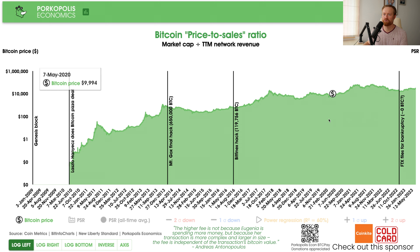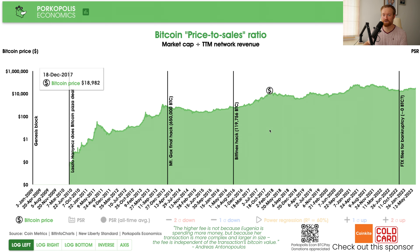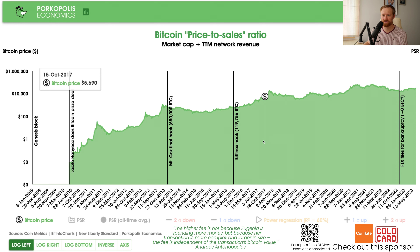Here we have the Bitcoin price chart in log scale on the left-hand axis, all the way up until a couple days ago — June 29th, 2023. For a few days we've been over $30,000 for Bitcoin. Log scale, so this is much smoother than it would look on linear scale. I want to provide an update to a multiple that I have not seen any other outlets or researchers talk about. See my prior videos if you want the full breakdown on what the PSR is.